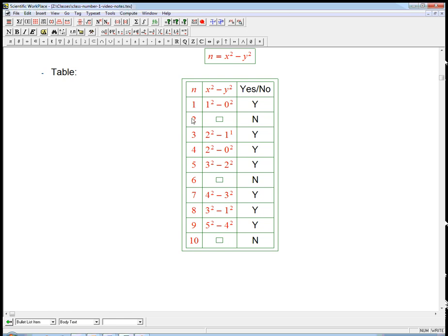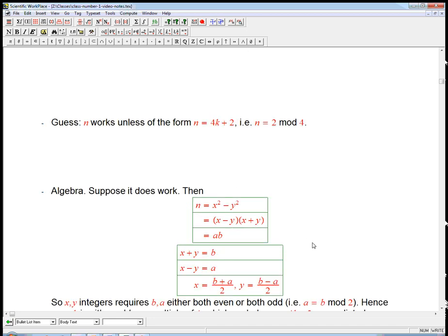So 2, 6, 10, yeah, it does seem to be periodic. The no's seem to come every 4. They seem to be things that have a remainder 2 when you divide by 4. So let's look at the algebra there.